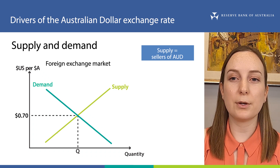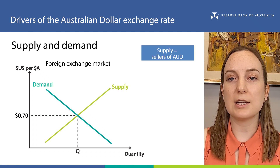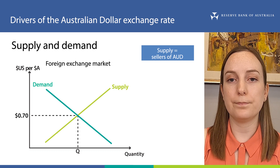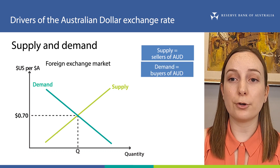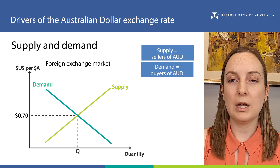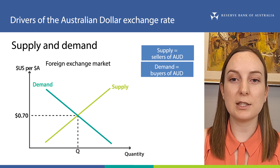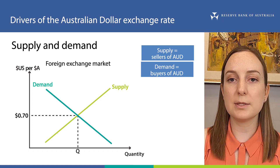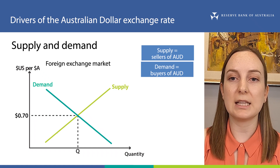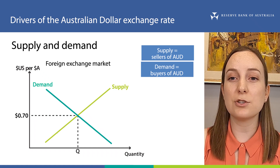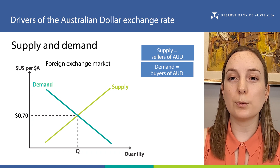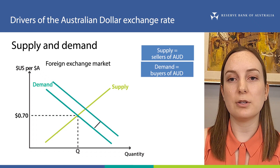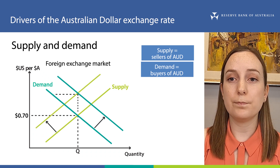The supply line slopes up because owners of Australian dollars are more willing to sell at an exchange rate when they will receive a larger amount of foreign currency in return. Demand is made up of owners of foreign currency who want to buy Australian dollars. This could be foreigners buying Australian exports or foreign investors making Australian dollar investments. The demand line slopes down because owners of foreign currency are less willing to purchase Australian dollars at an exchange rate when it will cost them more of their foreign currency. The Australian dollar will appreciate if demand for Australian dollars increases, supply decreases, or both.